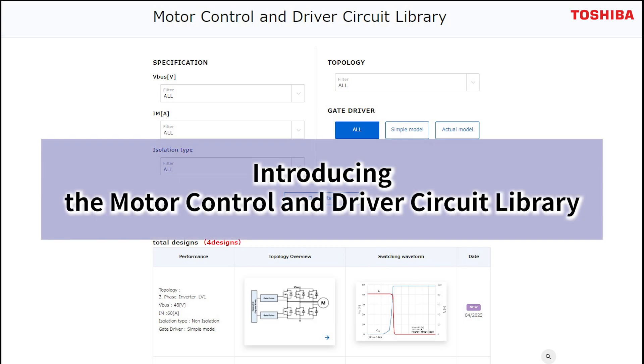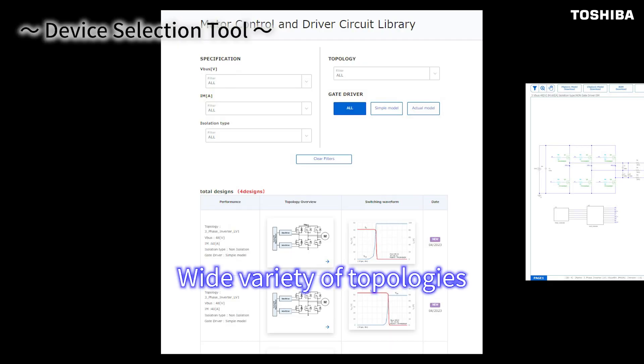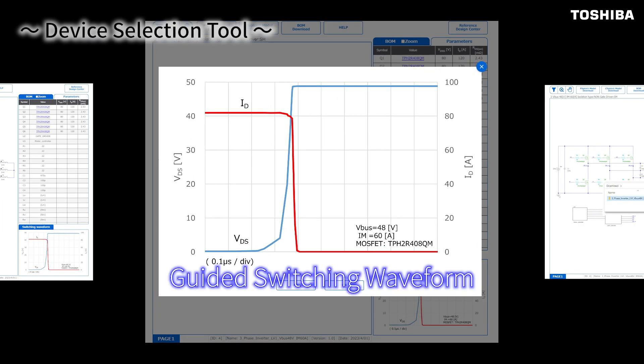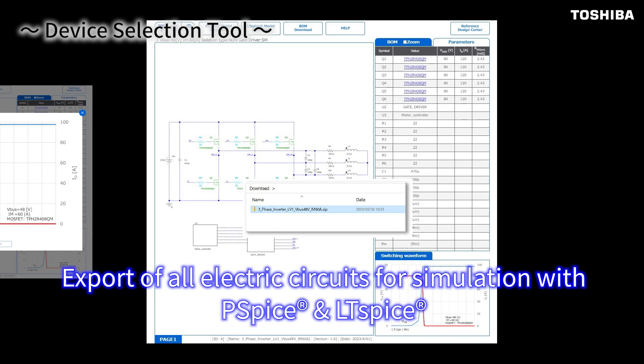This video introduces the Motor Control and Driver Circuit Library. Motor Control and Driver Circuit Library is a service that allows you to select and download various basic topologies of a motor application based on your actual requirements in order to verify the behavior of devices, including MOSFETs and photocouplers, within your simulation environment.